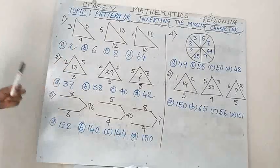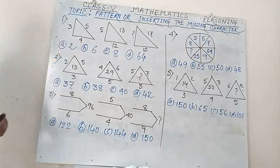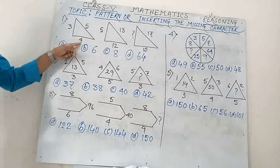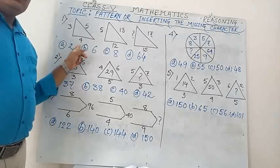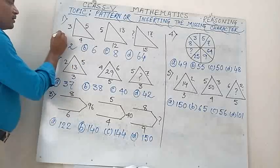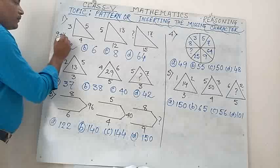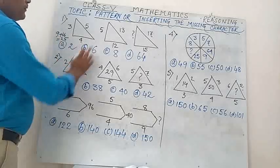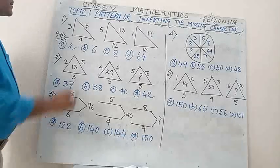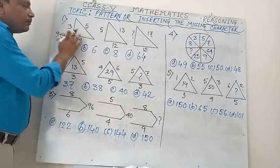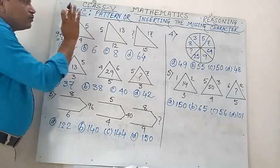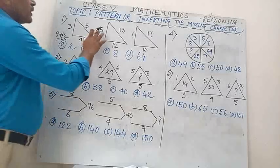So just look at the first one — what is the relation? You can see 3×3 = 9, and 4×4 = 16. So 9 plus 16 is 25, and 25 is 5×5. That is, 3² + 4² = 5².